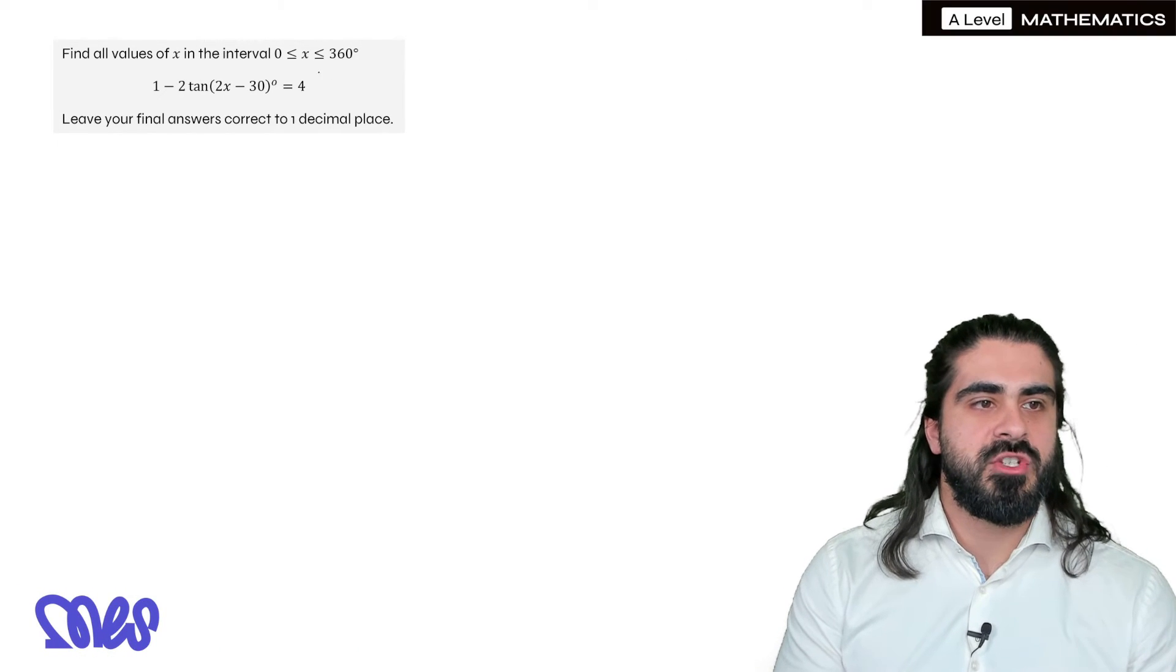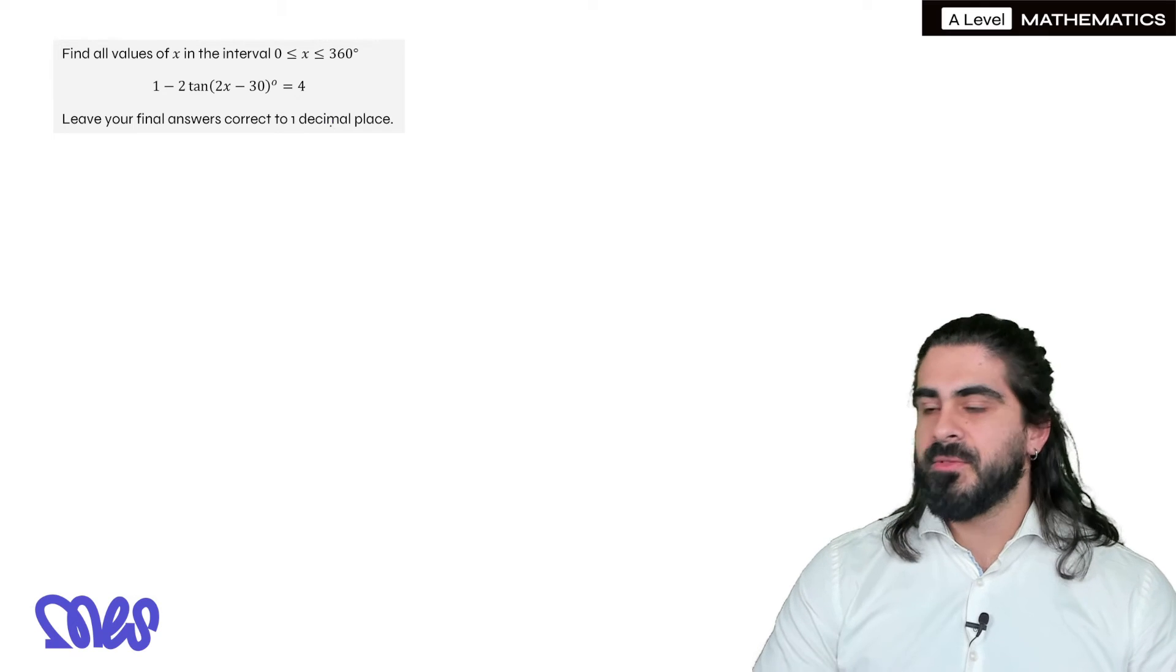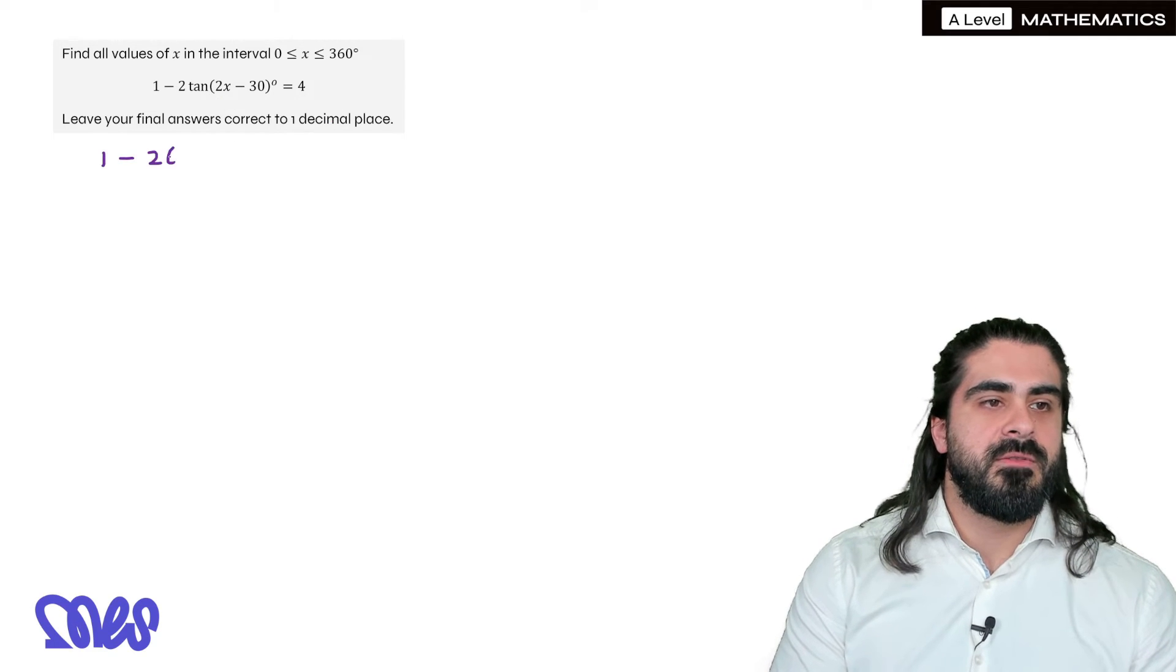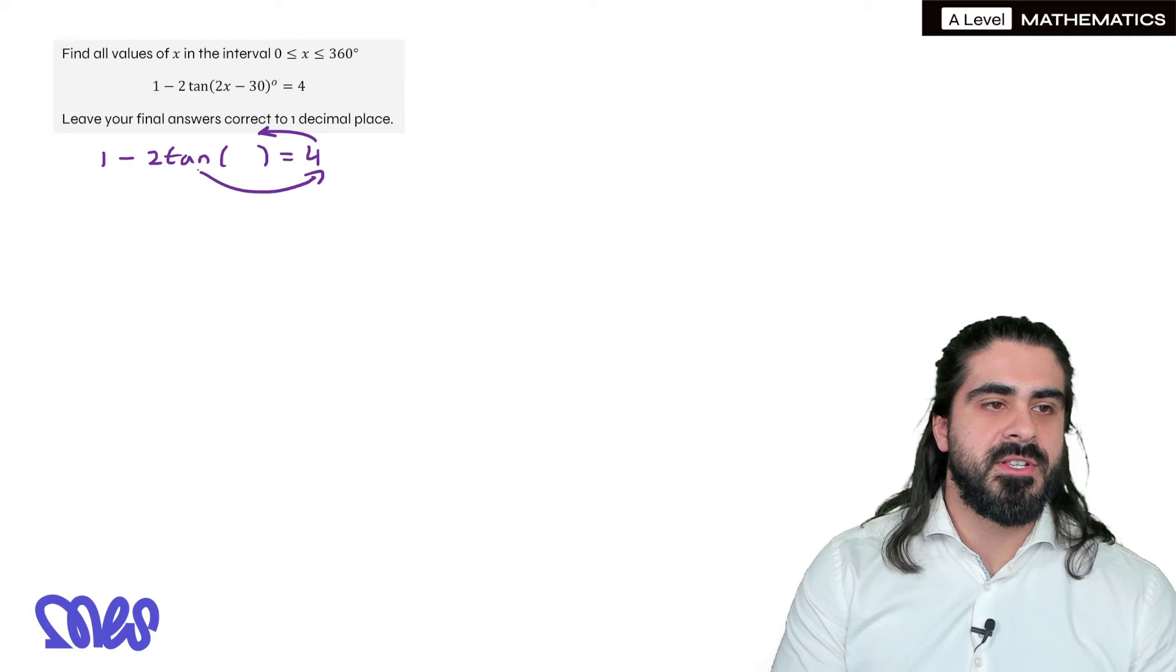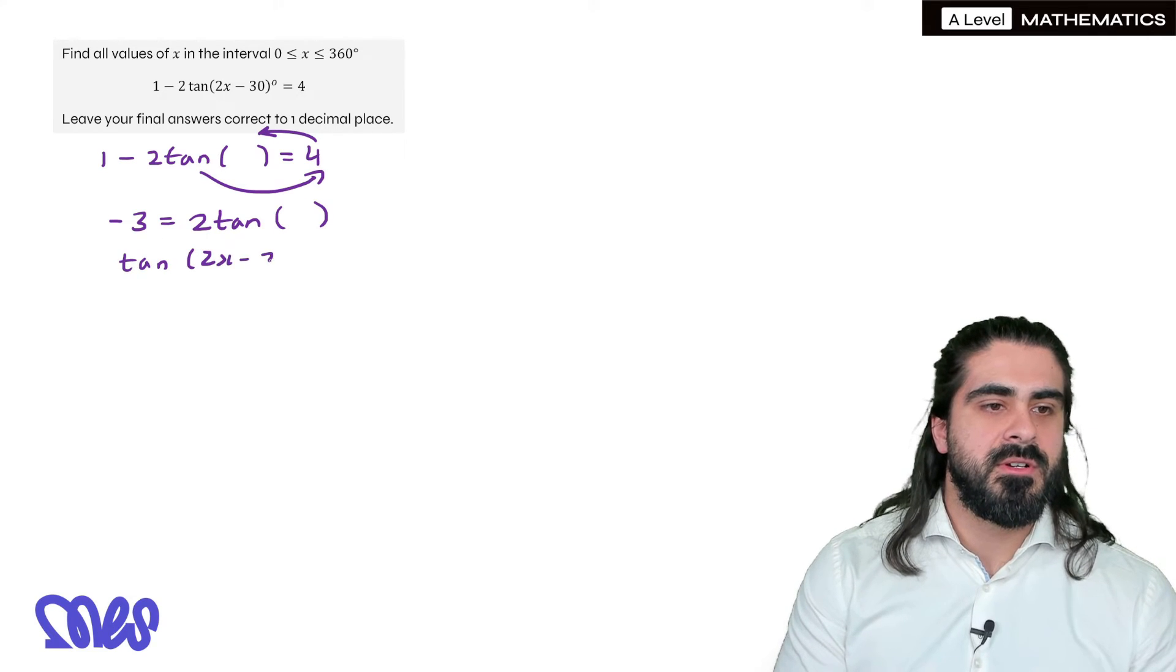Find all values of x between this range for this function. Leave your final answers to one decimal place. So step one is we need to rearrange for tan. Instead of writing the angle guys, I'm just going to say this. So I'm going to make this positive and the 4 can come to the other side. So you have 1 minus 4 is minus 3. And then this has become positive now. So tan of the angle, I'm going to write it now, tan of the angle is minus 3 over 2.